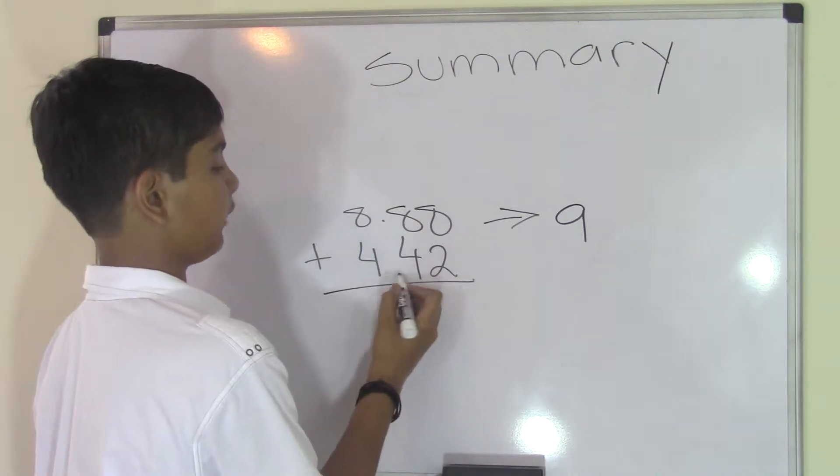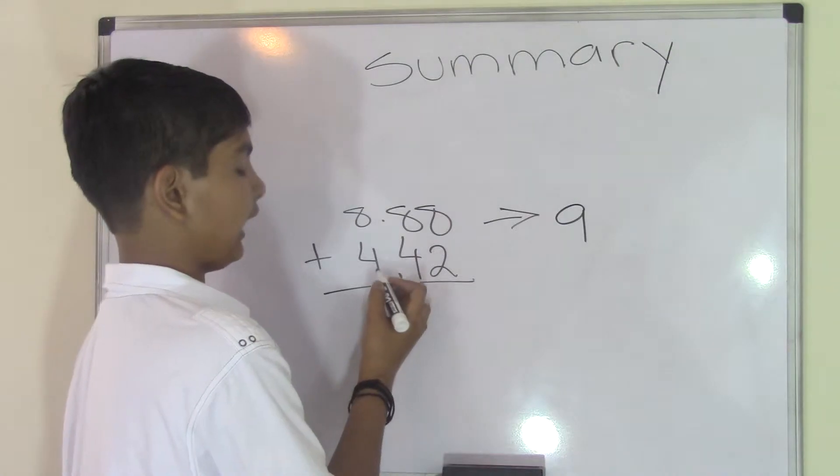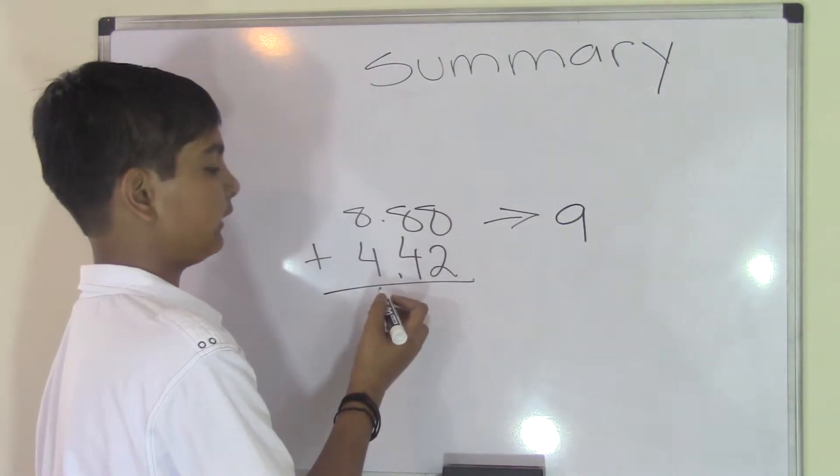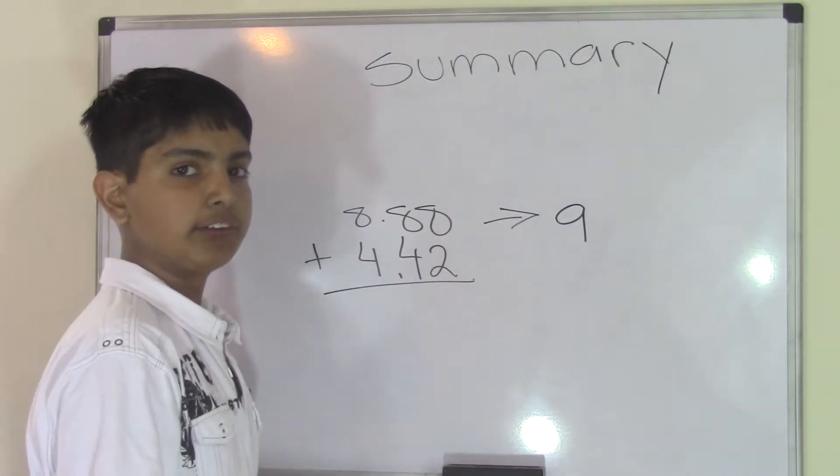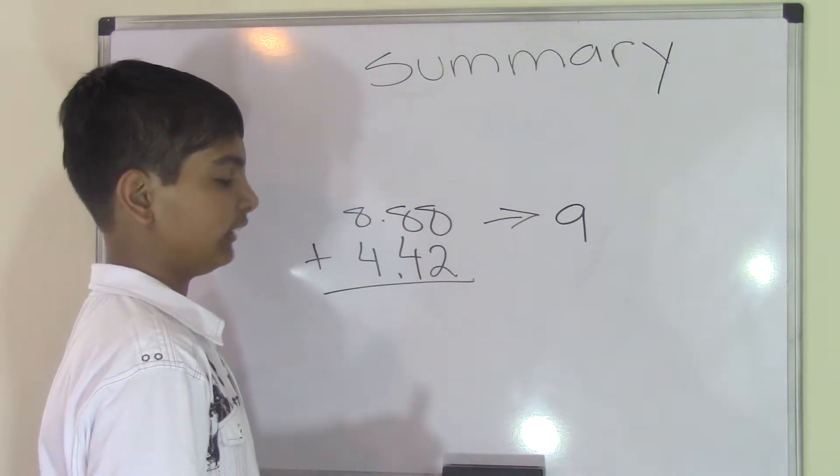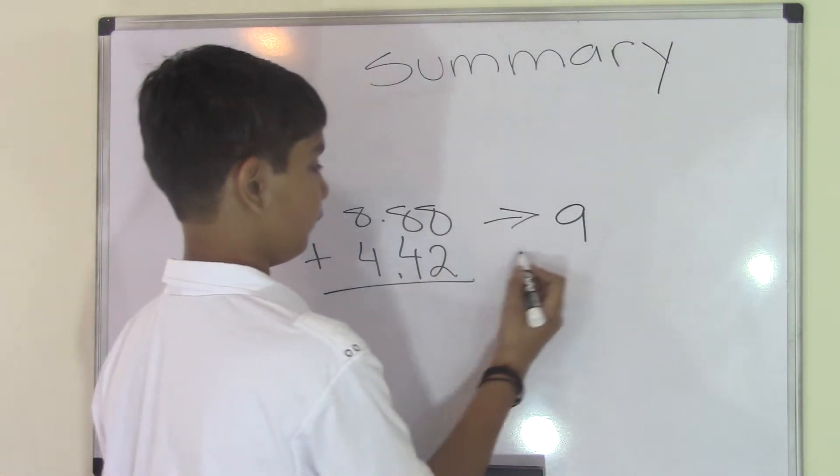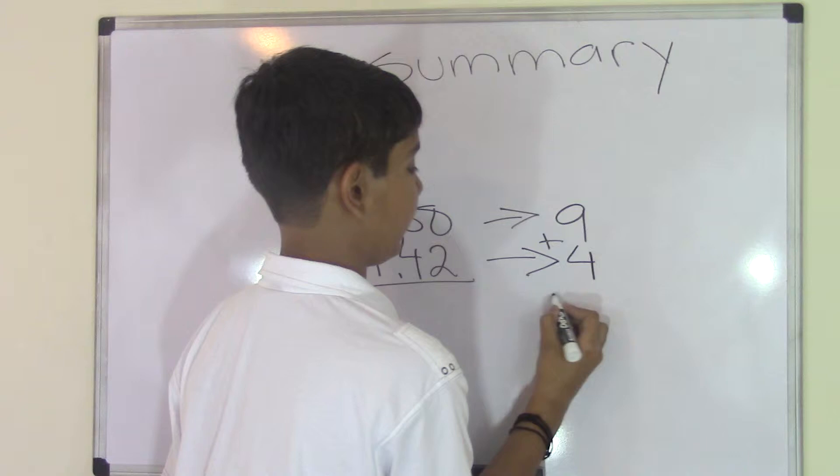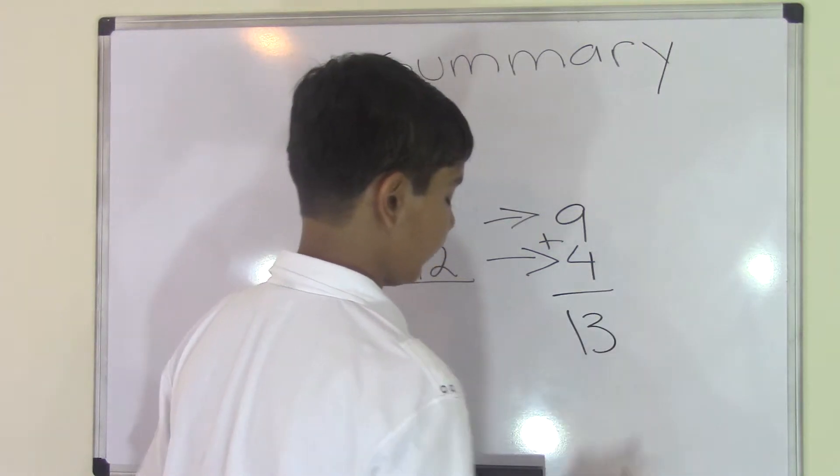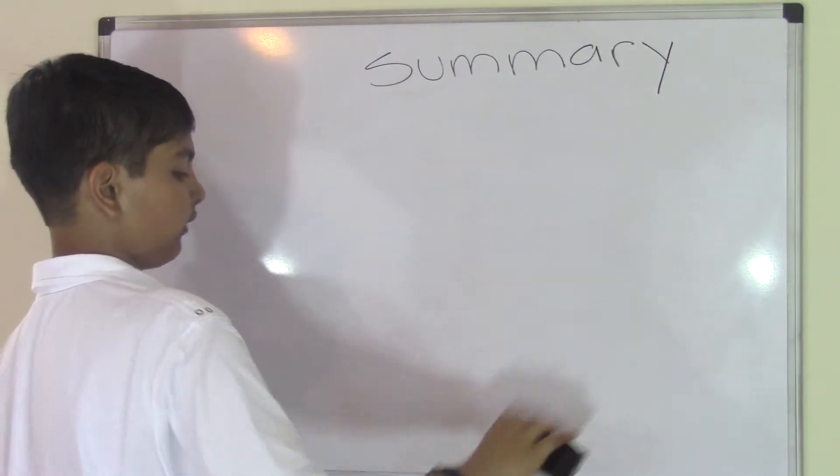Do the same over here. Look at the number after the decimal point. 42 is less than 50, so I keep the 4 as it is because you don't really change the 4 since the rounded number is less than the midpoint. Keep that 4 and go ahead and add that, and it's 13.